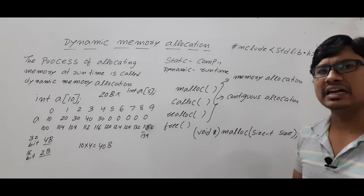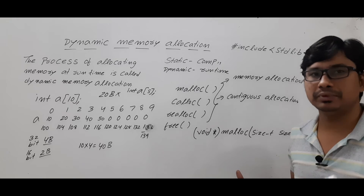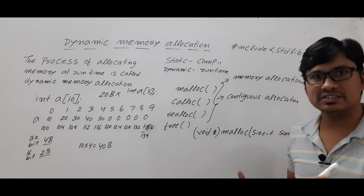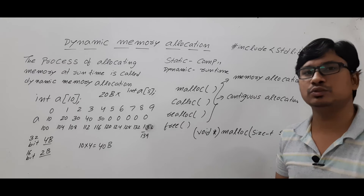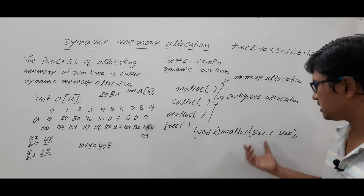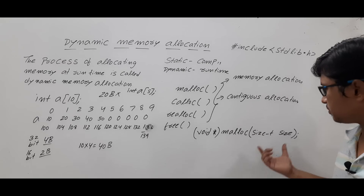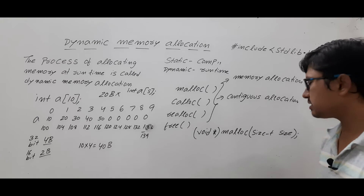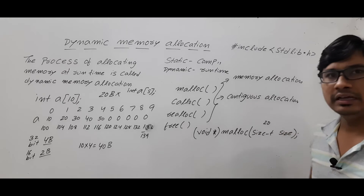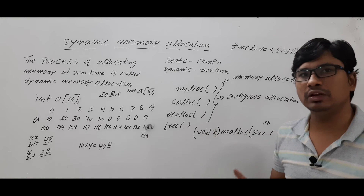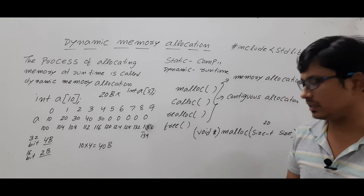The size is an unsigned int because the size cannot be a negative number — it will always be a positive value like 20 bytes or 30 bytes; you cannot say size is minus 20 bytes. So you specify how much size you want. Suppose the user enters the value 20 — then 20 bytes of memory will be allocated and given to the user during runtime.